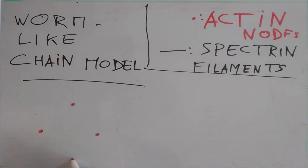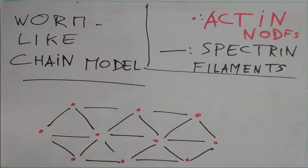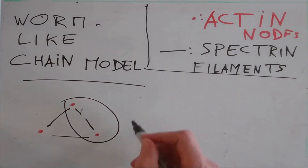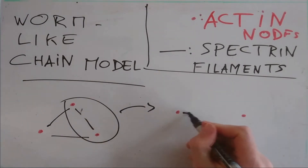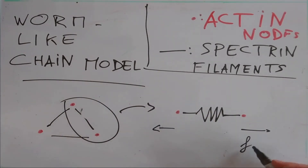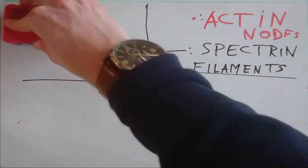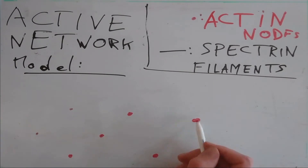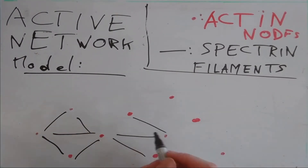Under the approximation of a static network and a worm-like chain polymer model, the spectrins act like a combination of springs contracting under strain. The surface energy is also minimized through the rearrangement of the lattice. At high strain, the rearrangement time is too long and the stiffness increases.